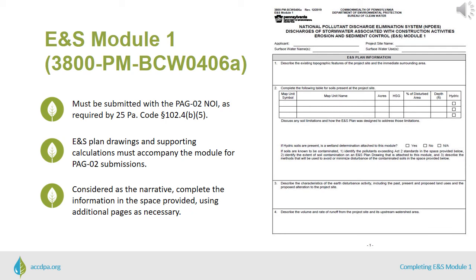ENS Module 1 contains 20 items that must be submitted with the PA-G02 NOI. I will briefly describe each of these items to help you submit a complete Module 1. All ENS plan drawings and their supporting calculations should also be provided, but please keep in mind that the Module is replacing the Narrative, so items that ask for descriptive, detailed information should be filled out completely in the space provided. However, some spaces may not be large enough, and additional sheets may be attached as necessary.